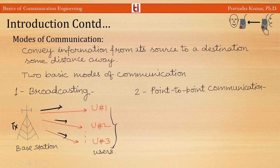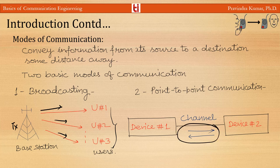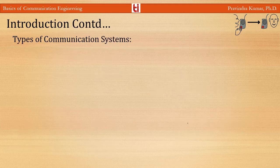The other mode of communication is point-to-point communication, in which the communication process takes place over a link between a single transmitter and a receiver. In this case there is usually bi-directional flow of information — unlike broadcasting where the signal flows in only one direction. In point-to-point communication, signal flows in both directions, known as full duplex, such as a telephone link between an earth station and a robot navigating the surface of a distant planet.